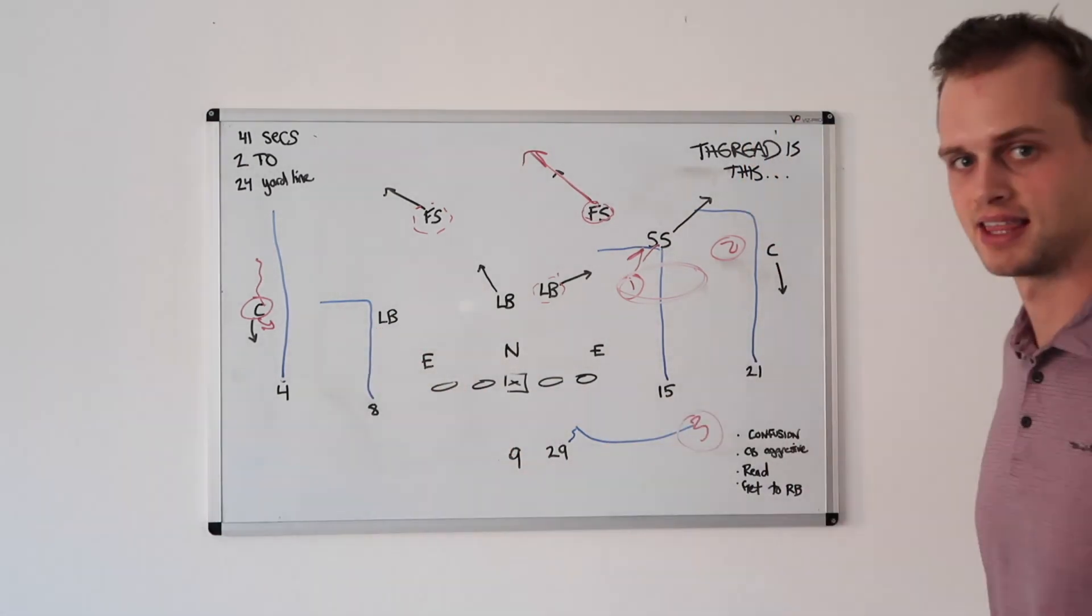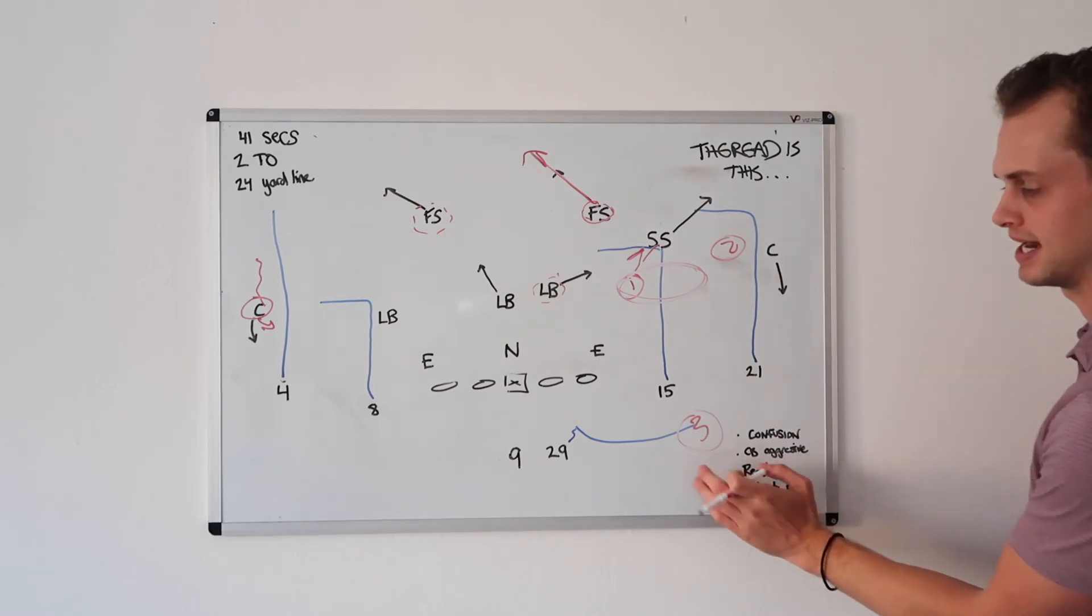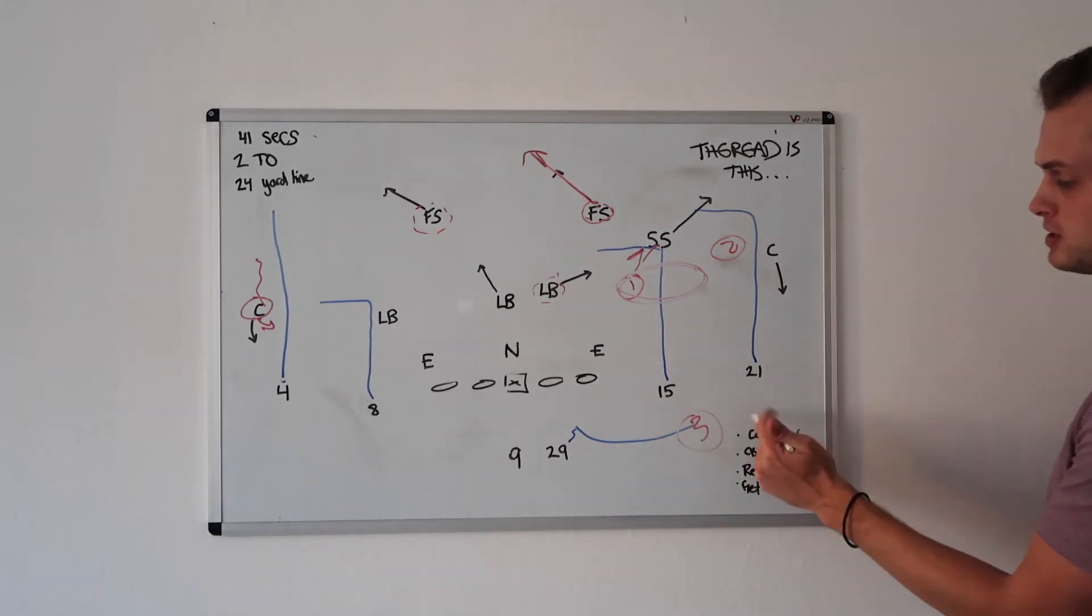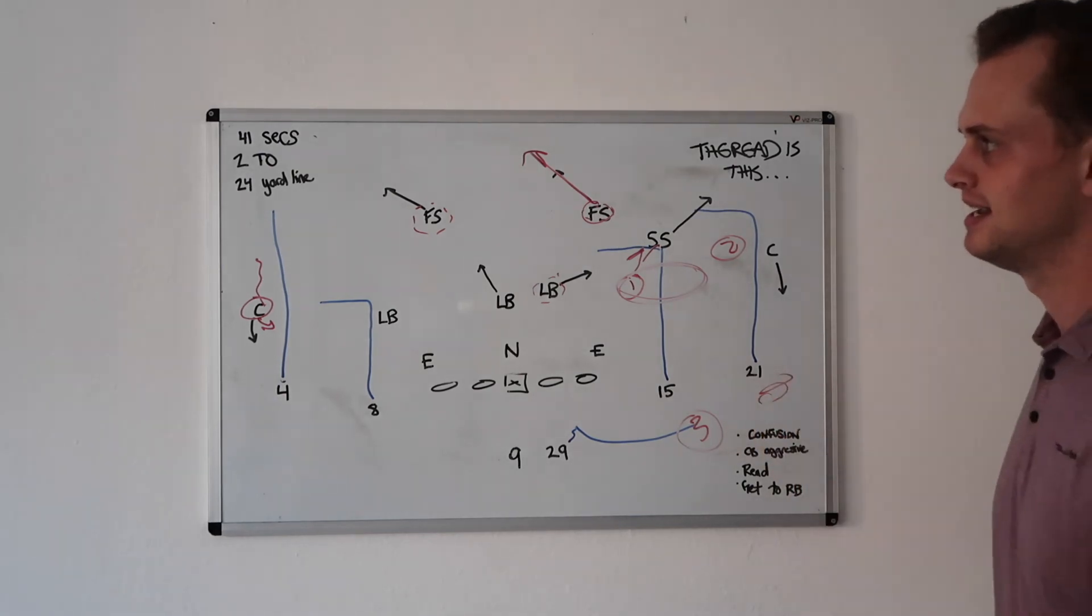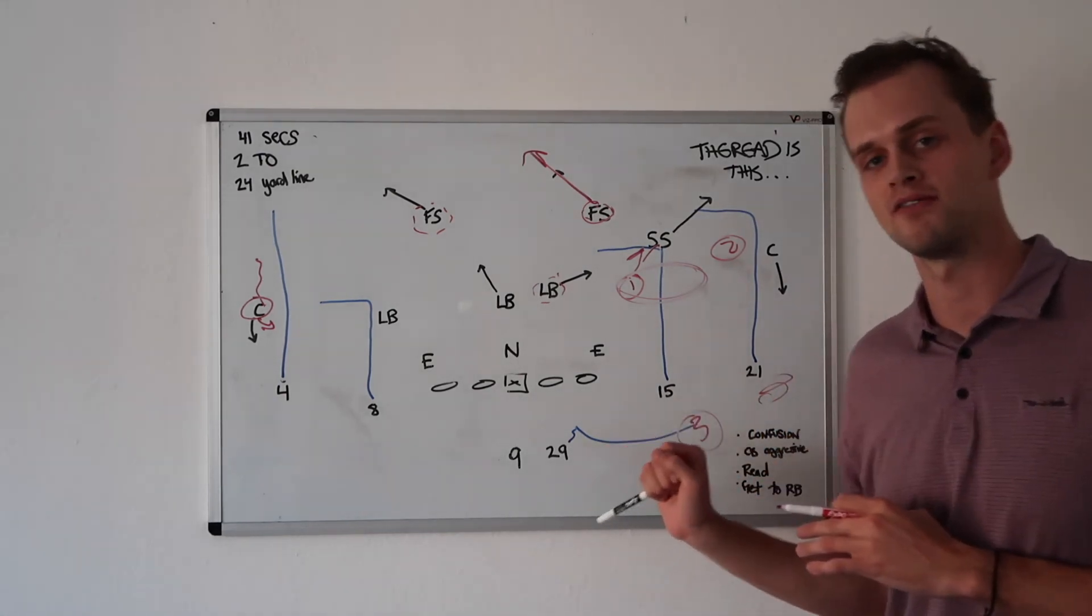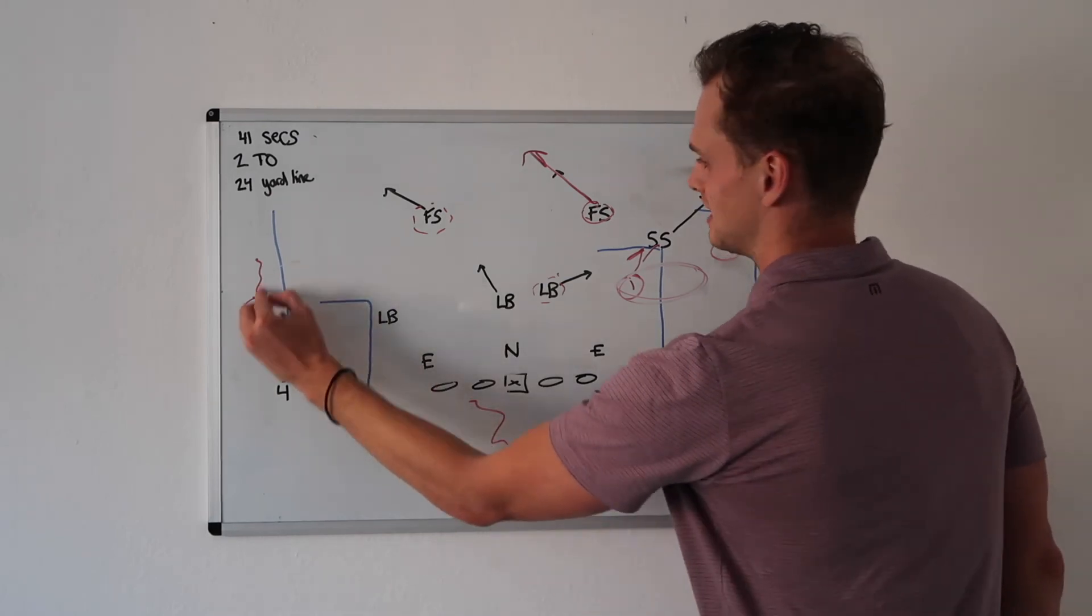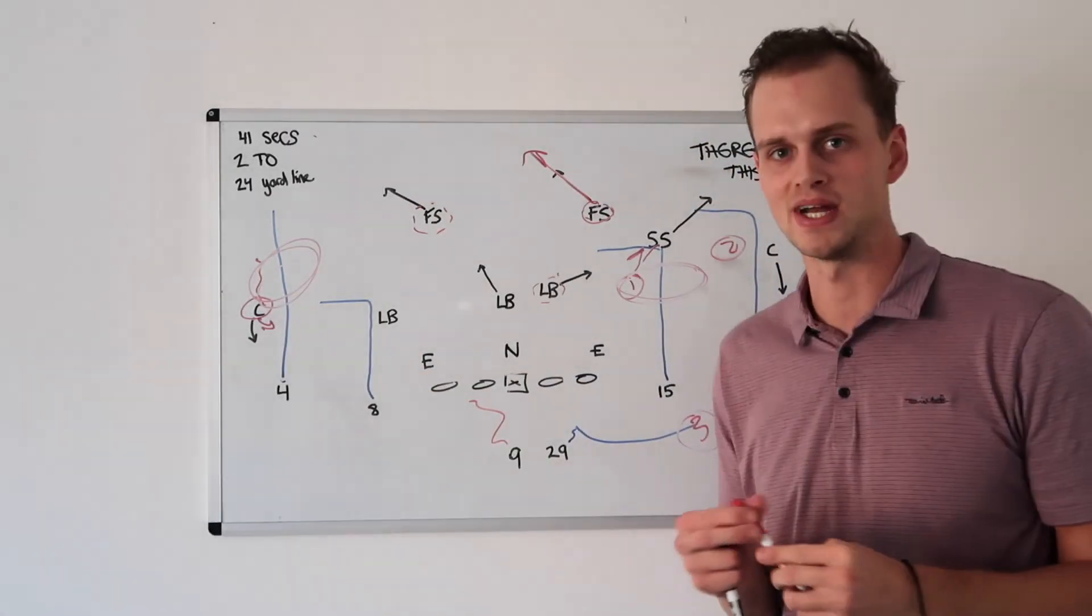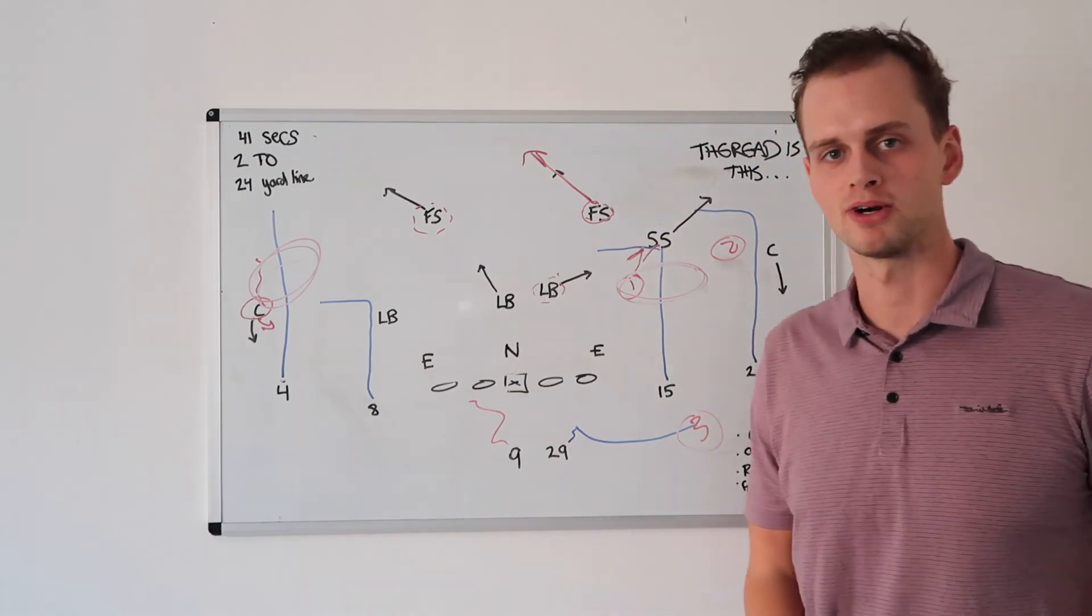Almost a costly mistake there. The answer would have been checking it down to Vi, getting four yards. He would have got out of bounds because he's close to the sideline. Obviously, Keaton steps up, gets very fortunate with throwing one over there. And so with that read in mind, let's check out the play one more time.